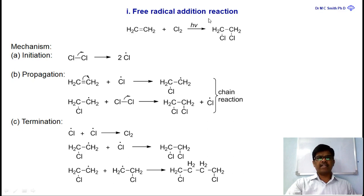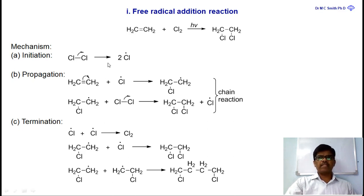The first type is free radical addition reaction. The name itself says that the reagent used is a free radical. As we have learned, free radicals are formed by the homolytic bond fission of a molecule. Mechanistically, a free radical addition reaction of alkenes proceeds in three stages.